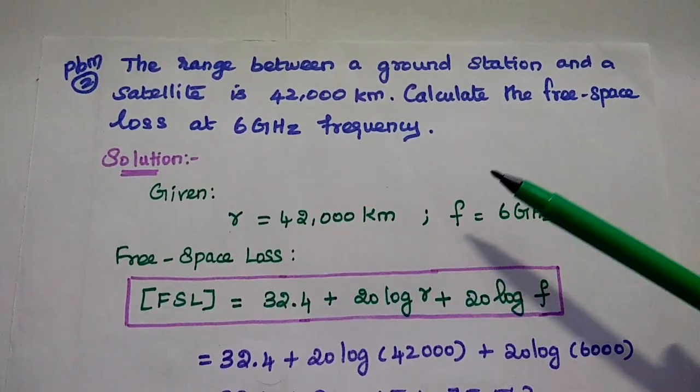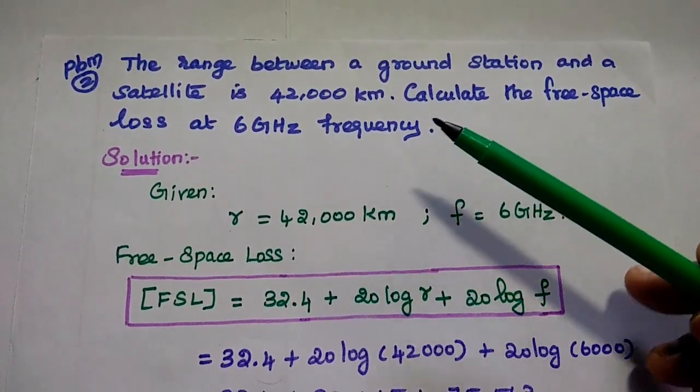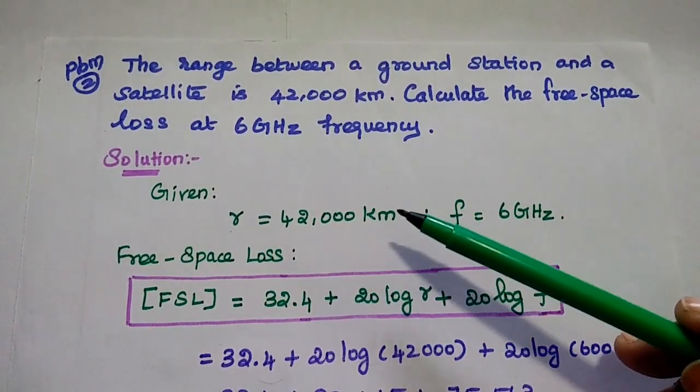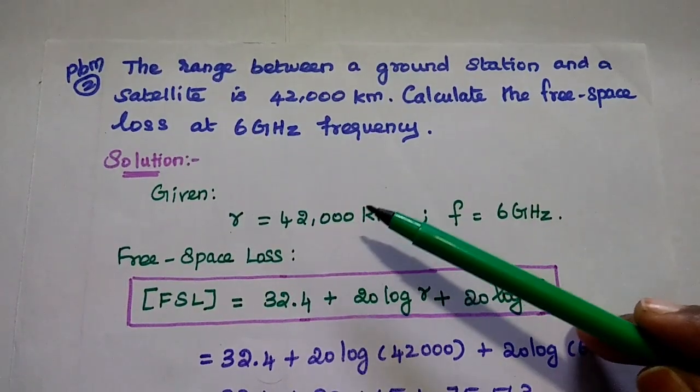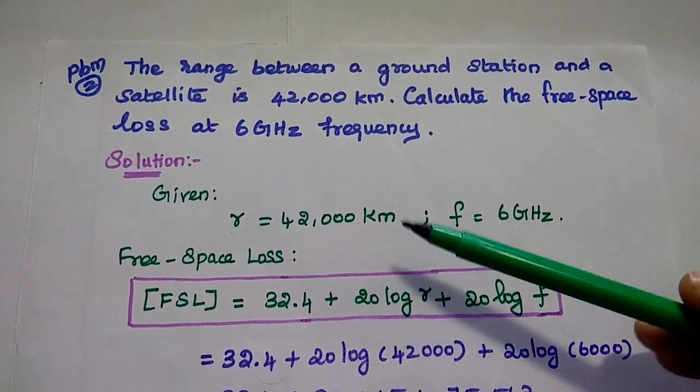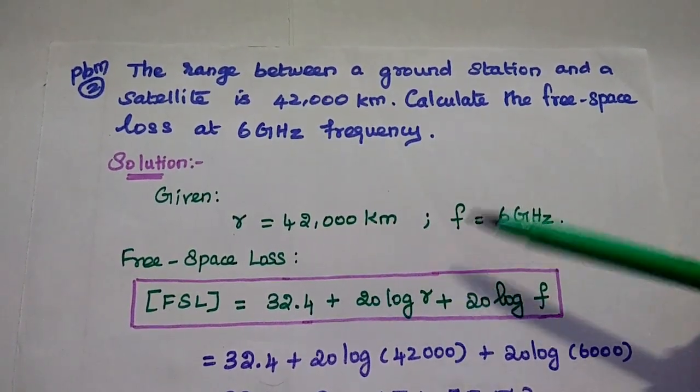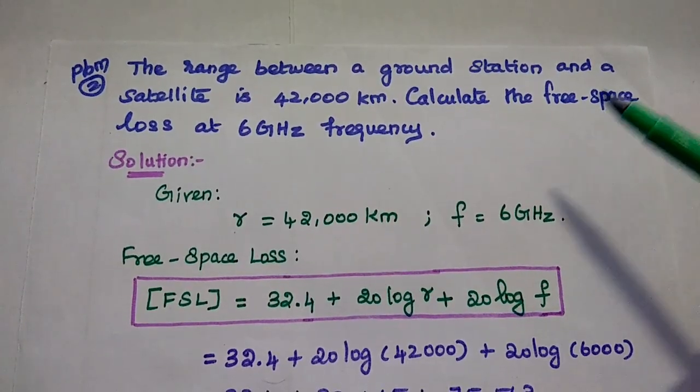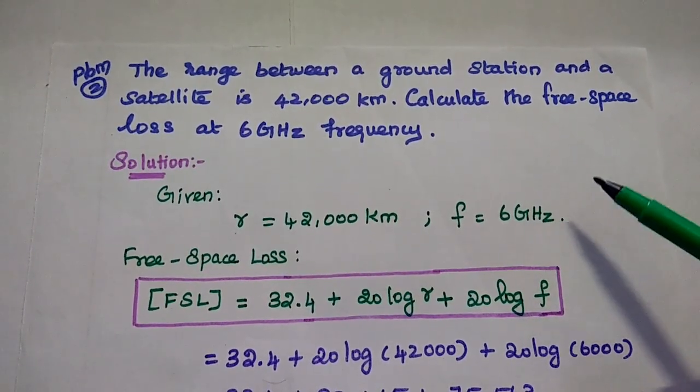In the solution part, we have to write the given data. The range, that is 42,000 km, is the distance between ground station and satellite. We are going to find out the free space loss at the frequency 6 GHz.